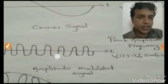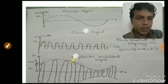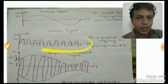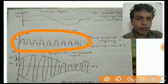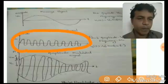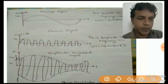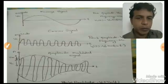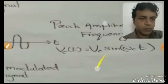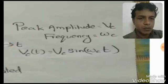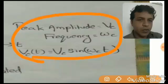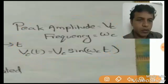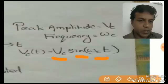Now we shall take the carrier signal. This carrier signal also has an amplitude Vc and a frequency omega c. With this knowledge we can represent this signal in equation form as: Vc(t) = Vc · sine(omega c · t).